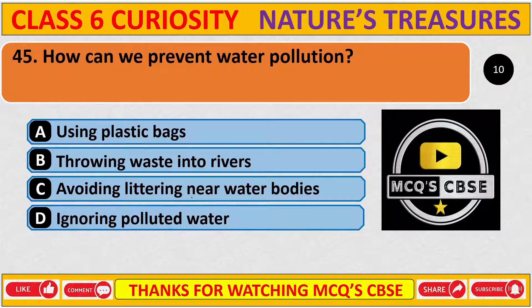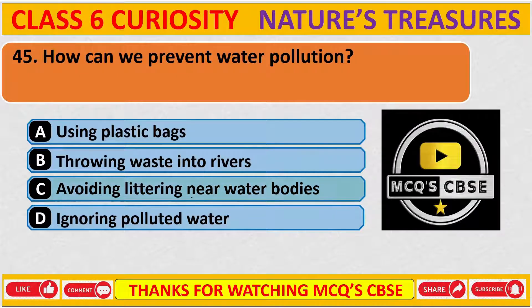How can we prevent water pollution? The correct answer is C: Avoiding littering near water bodies.